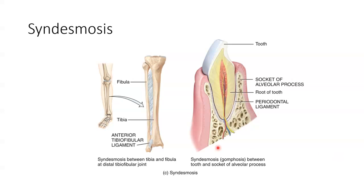An example of a syndesmosis is the distal tibiofibular joint, where the anterior tibiofibular ligament connects the tibia — the thick bone here — to the fibula, which is the thinner bone here, in our lower leg. It permits slight movement at the ankle, and so is hence also described as an amphiarthrosis.